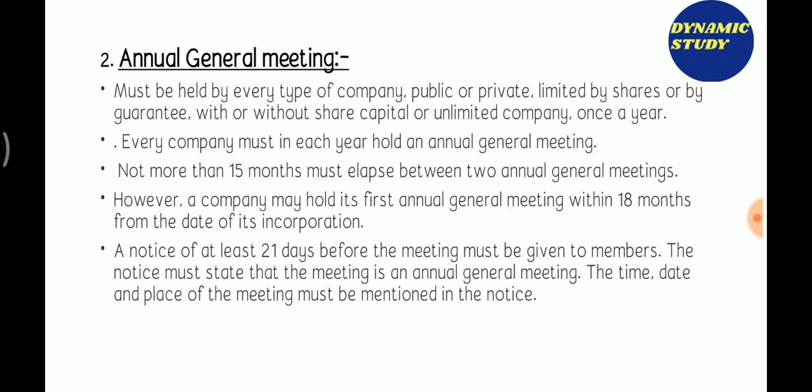Every company must in each year hold an Annual General Meeting. No more than fifteen months must elapse between two consecutive Annual General Meetings. However, a company must hold its first Annual General Meeting within eighteen months from the date of its incorporation — even if that exceeds the fifteen-month interval rule, the first AGM can be held within eighteen months of incorporation.